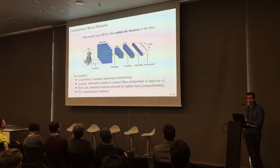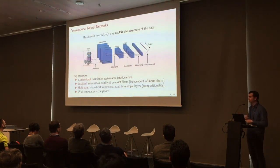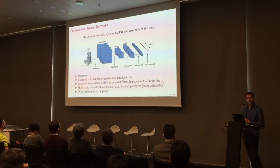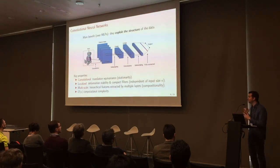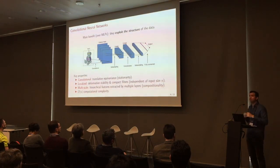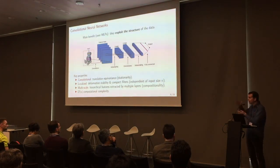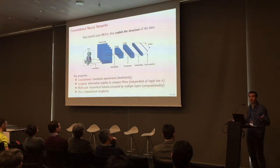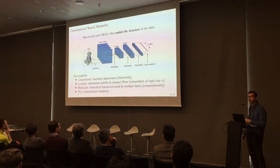We start from convolutional networks — those of you who have done machine learning have probably heard of this, the classical tool used in computer vision. It works by having many layers of feature extraction. Maybe the first layer learns to detect edges, the second combines edges to detect textures, the third locates and identifies objects, and so on, building higher and higher level features, ending up with face or human recognition. Think of it as a layered feature extractor system.